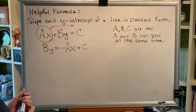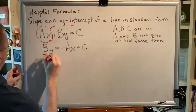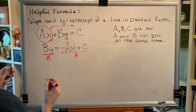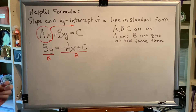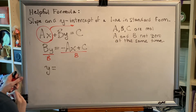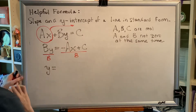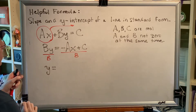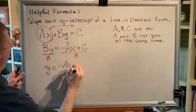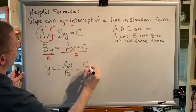The next step is to divide both sides of the equation by b — and when we say both sides, we mean the whole left side and the whole right side. The b's cancel on the left, giving us y equals, and on the right we get two fractions: negative ax over b plus c over b.